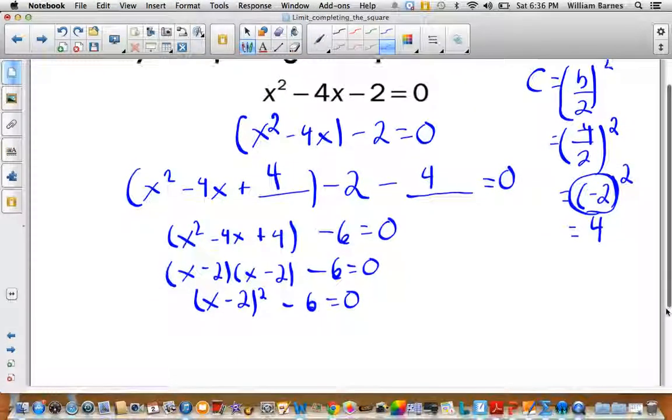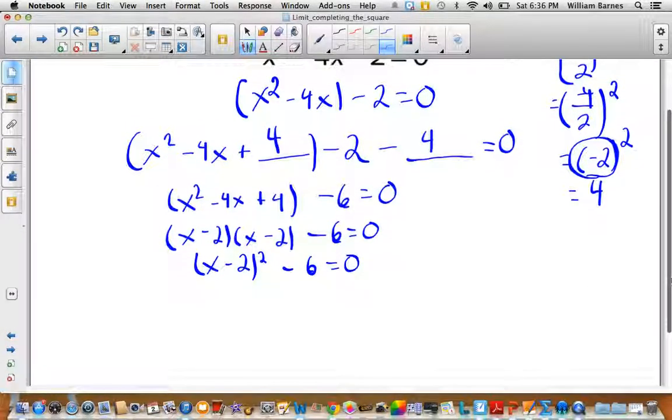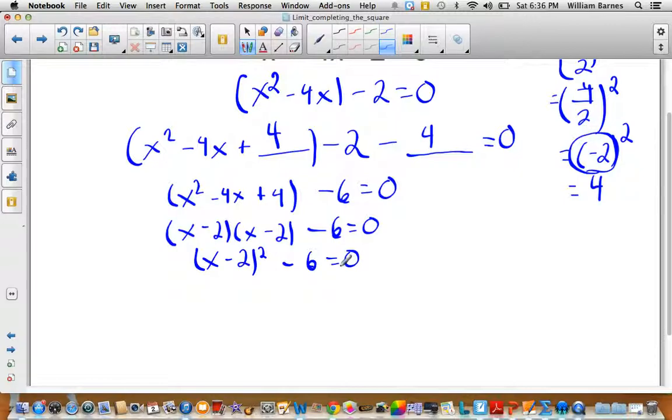It looks a lot like my vertex form except the fact that I don't have the y. Once I have that done, now I can solve my equation. I'll add 6 to both sides, so I get x minus 2 squared is equal to 6. Then I'll square root both sides. The important thing to recognize is when I square root, I have plus or minus. Every quadratic has two solutions. That's where they come from, the plus or minus the square root.